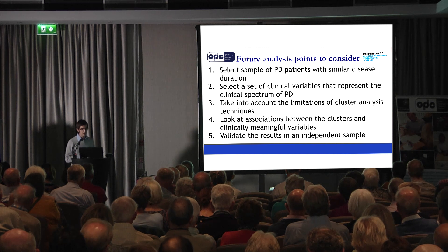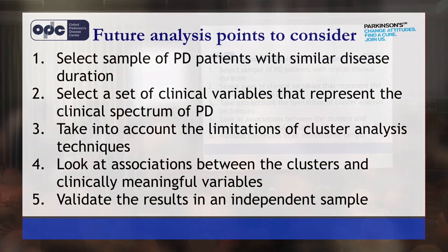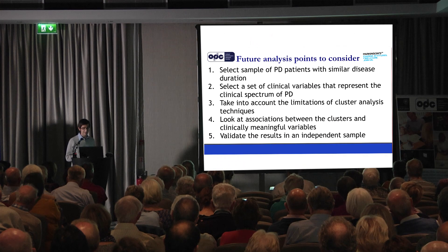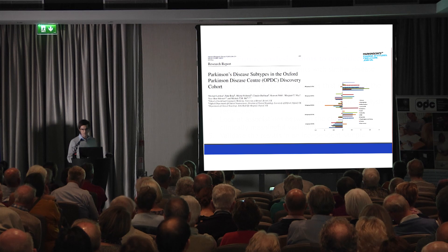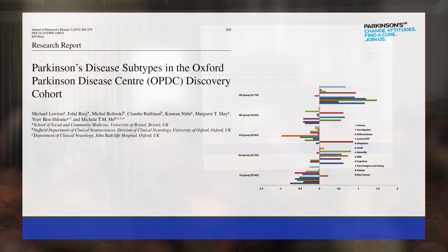The five points that this systematic review came out with were: one, that we should select a sample of PD patients with similar disease duration; two, that we should select clinical variables that represent the whole clinical spectrum of Parkinson's; three, that we should take into account the limitations of cluster analysis techniques; four, that we should look at the associations between clusters and clinically meaningful variables; and five, that we should validate the results in an independent sample.